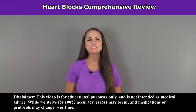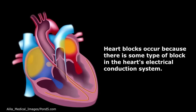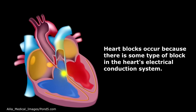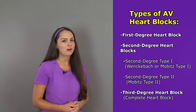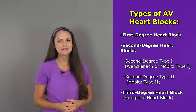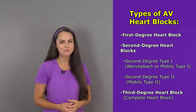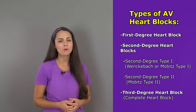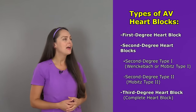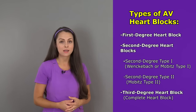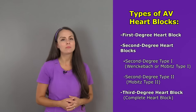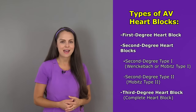As a nurse you want to be familiar with heart blocks. Heart blocks occur because there is some type of block in the electrical conduction system. There are various types: first-degree heart block, second-degree heart block — which includes second-degree type 1, also referred to as Mobitz type 1 or Wenckebach block — second-degree type 2, also referred to as Mobitz type 2, and lastly complete heart block, sometimes referred to as third-degree heart block.